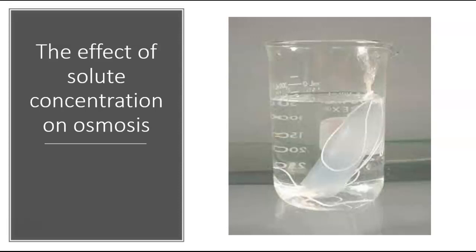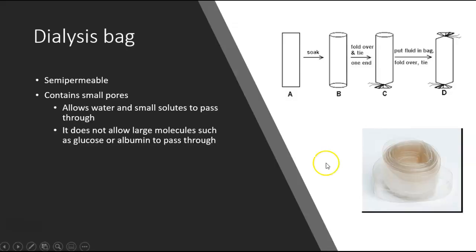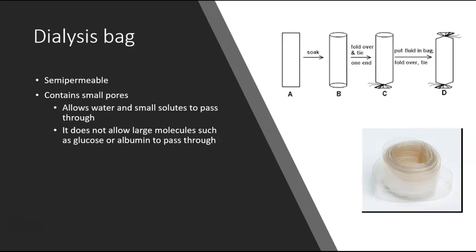Now I'm going to talk about the effect of solute concentration on osmosis. First, let's talk about what a dialysis tube is. A dialysis bag or tube has little holes on it, so it is not perfectly impermeable — it allows certain molecules and ions to pass through. When you first buy it, it looks like one layer, but it is actually two layers attached to one another. You cut off a piece and soak it in warm water, and the two layers detach to form a tube.